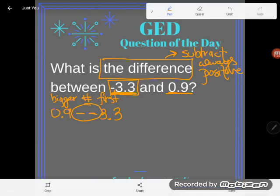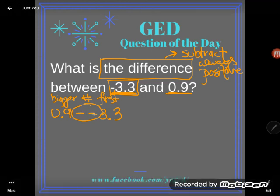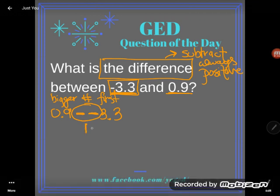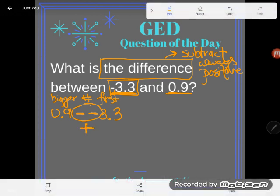When you have two negatives in a row, you can think of it like the opposite of subtraction or the opposite of a negative number. The opposite of subtraction or the opposite of a negative number is positive. And so, or plus.